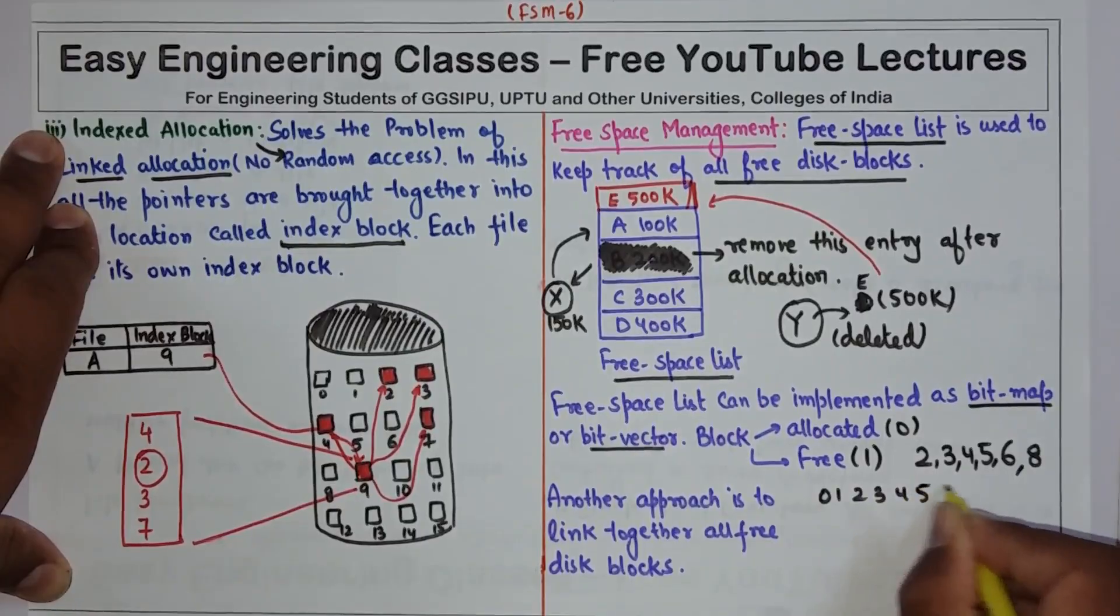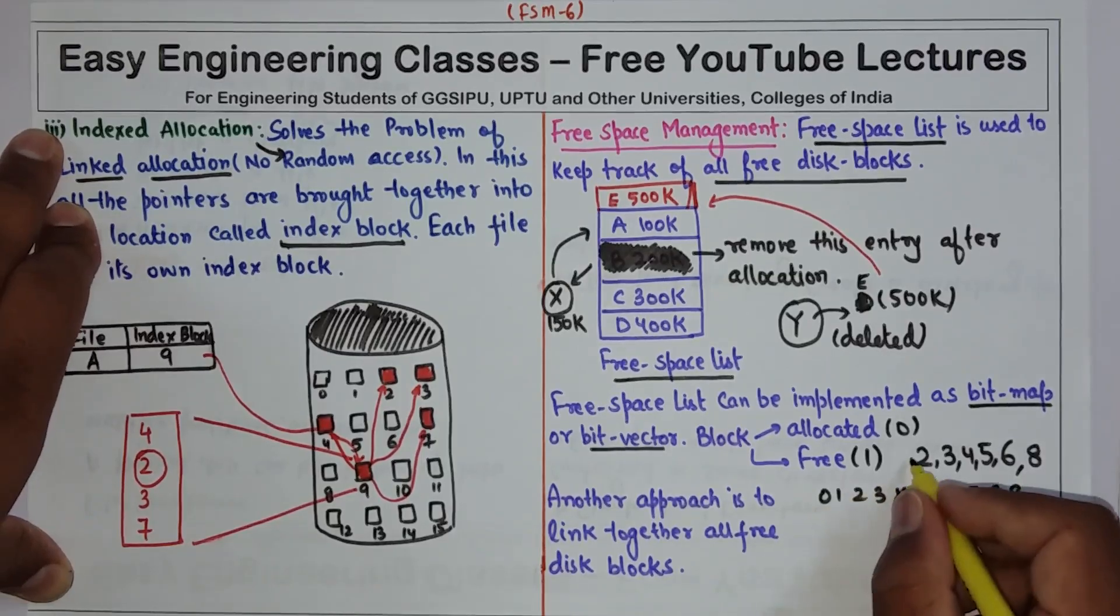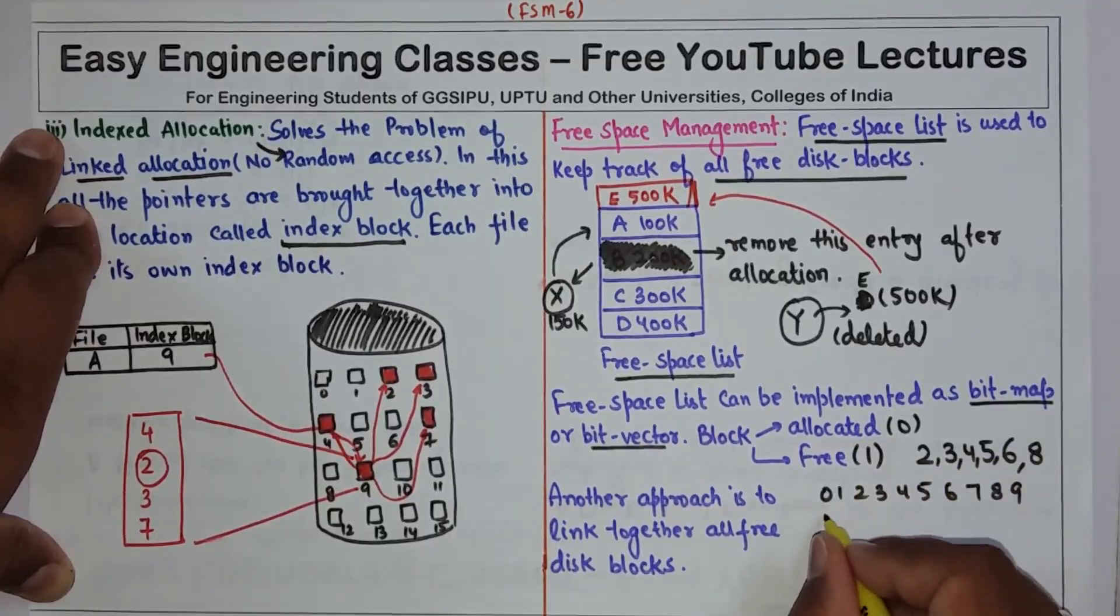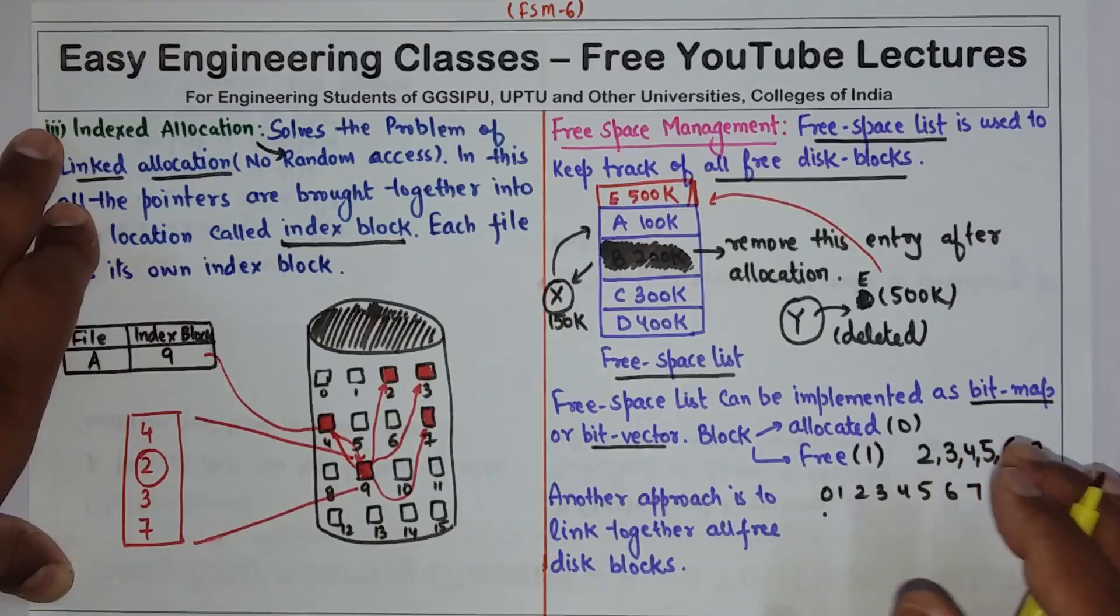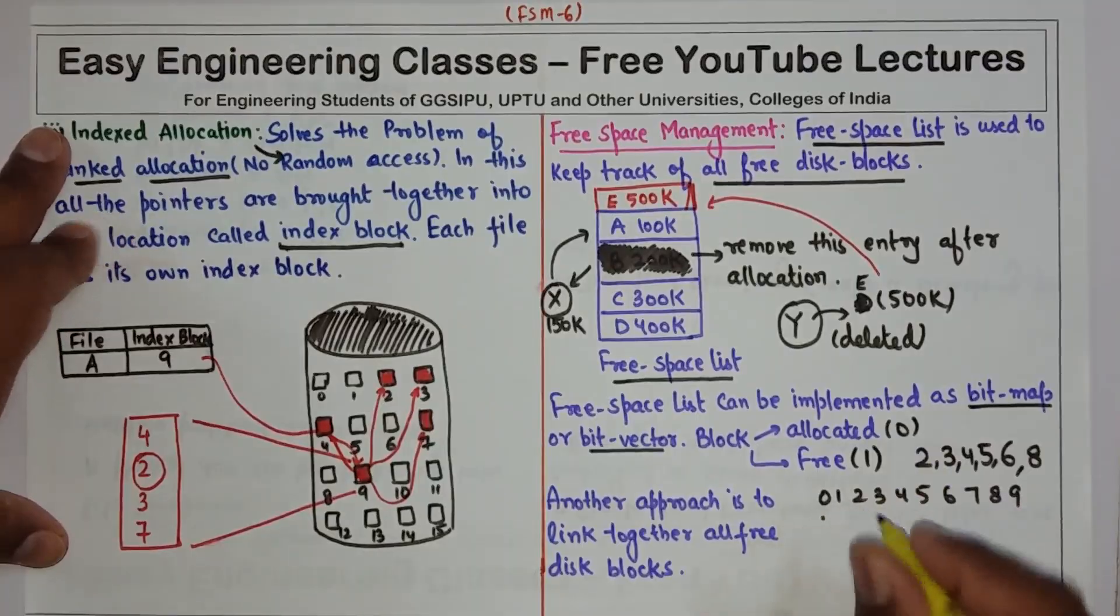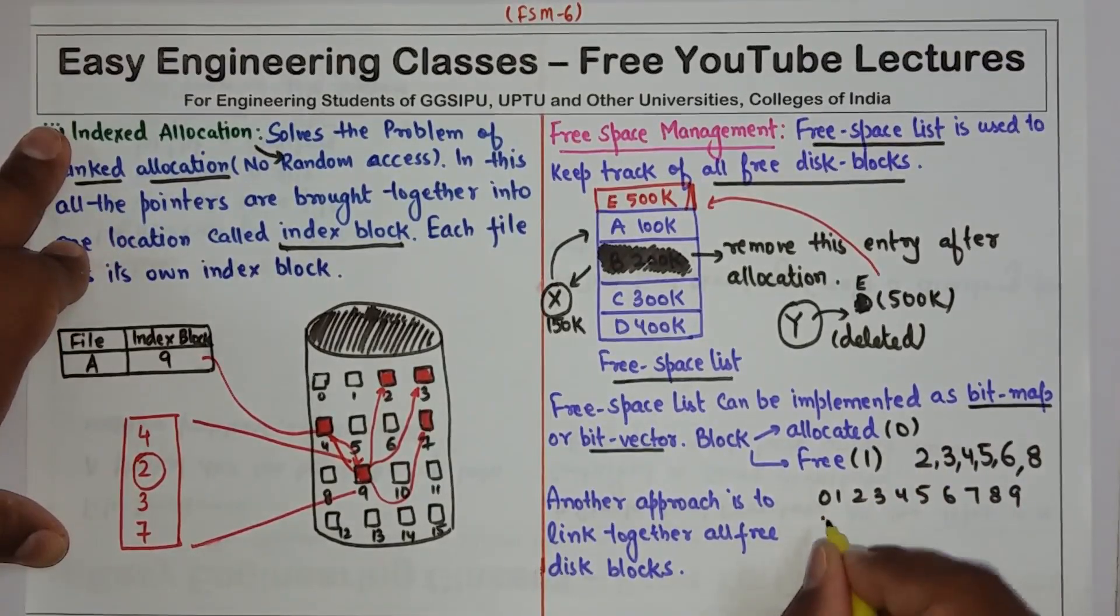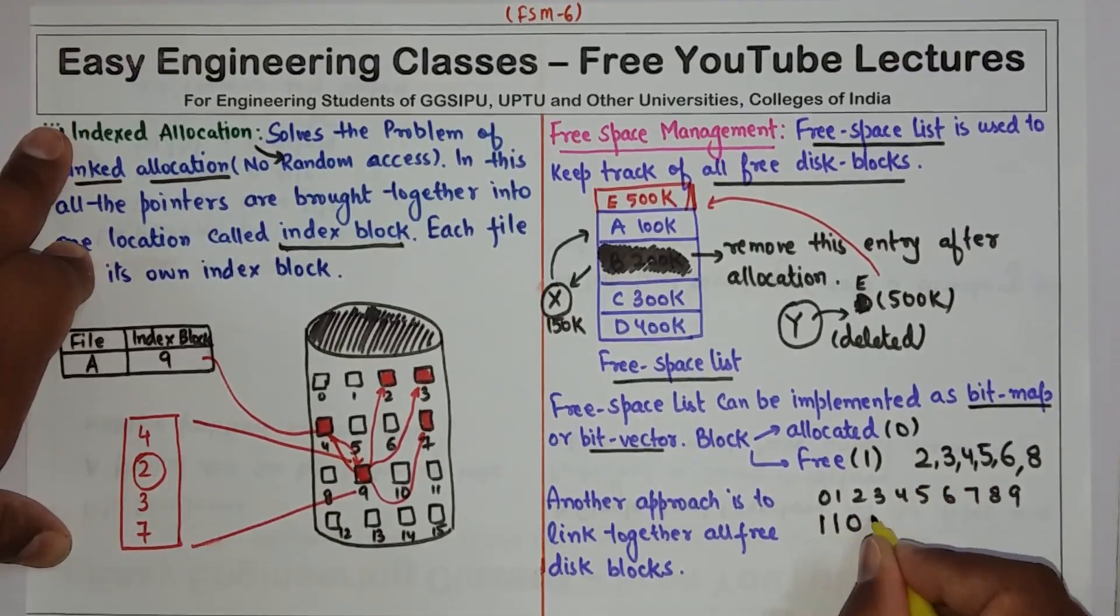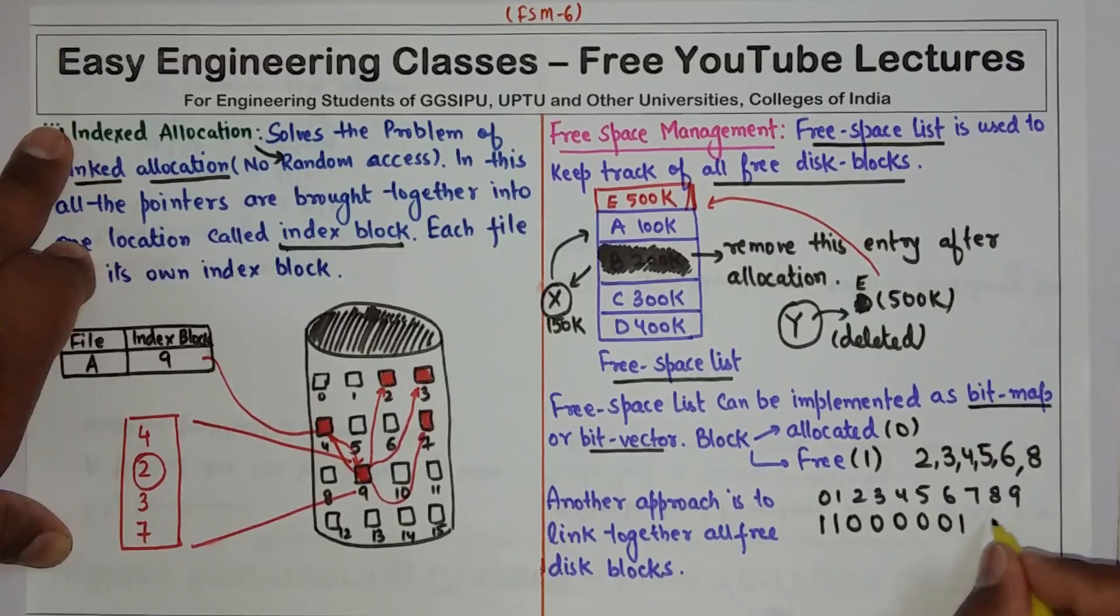So 0, 1, 2, 3, 4, 5, 6, 7, 8, 9. Suppose this is the disk. So for 0, 0 is not allocated so I will have 1, 1, 1. Block 2 is allocated so 0. Now 7 is also not allocated, 1. 8 is allocated, 0. 9 is not allocated, 1. So that is how you can use bitmap vector to implement free space list.